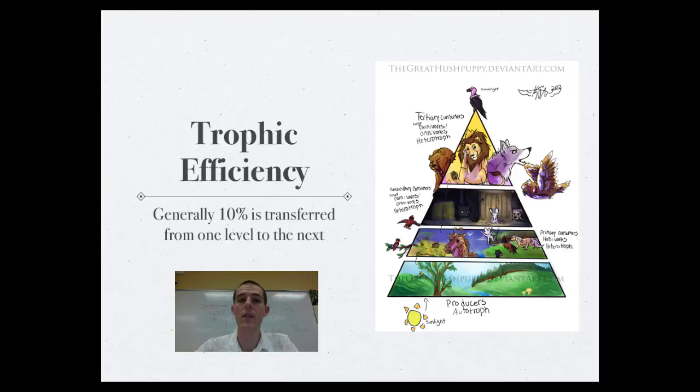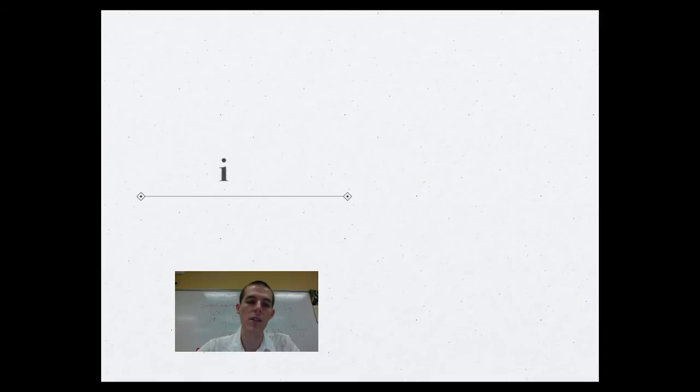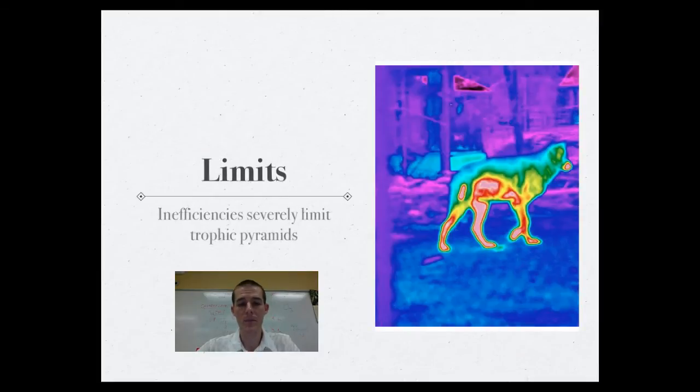Some small organisms that don't have to worry about that, like insects, could be up to 40% efficient because they aren't losing nearly as much energy trying to keep that body warm. So just recognize there is a large range, but in general, 10% of the energy from one level is actually transferred on to the next level. And this energy transfer is limited mostly by heat.